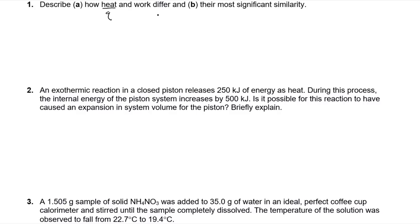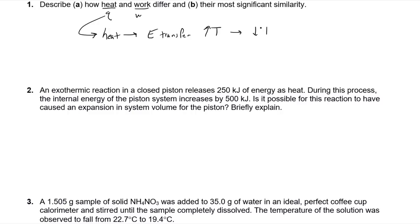The first question asks how heat (Q) and work (W) differ and their most significant similarity. This is really just a definition question. Q is heat, and heat is defined as an energy transfer — specifically an energy transfer from an area of high temperature to an area of low temperature. Temperature is a measure of average translational kinetic energy, so fast molecules colliding with slow ones transfer kinetic energy — that is effectively heat.